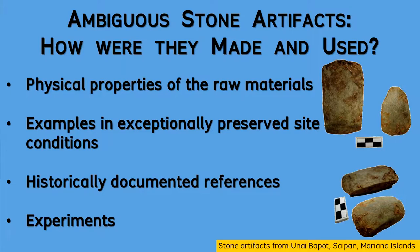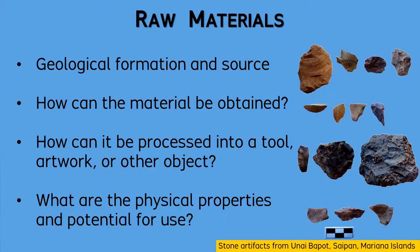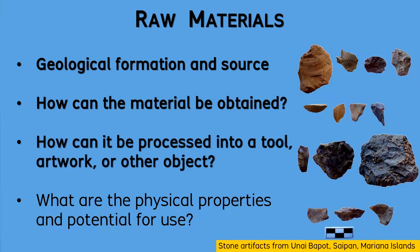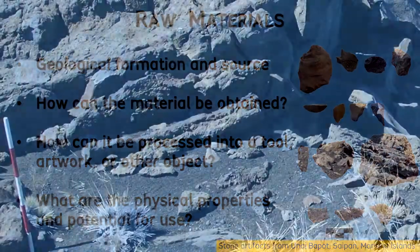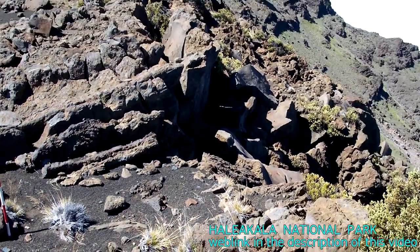Concerning the raw materials of stone artifacts, you can begin with identifying the type of geological formation, or even the specific source. Next, you can search for how people obtained the raw material, and then you can assess how the material was processed into a final product. In this approach, you should be aware of the physical properties of the stone in question, noting how those properties affect the potential use.